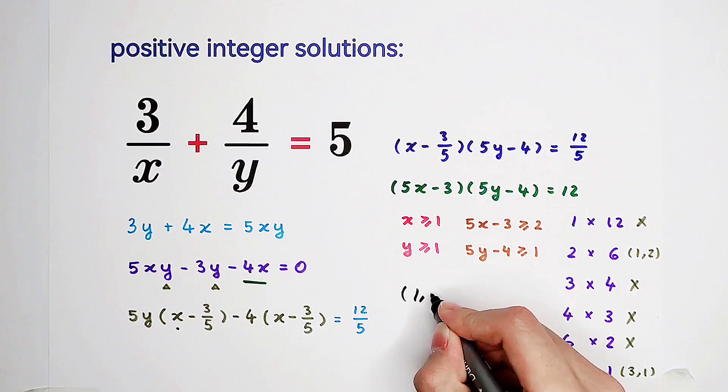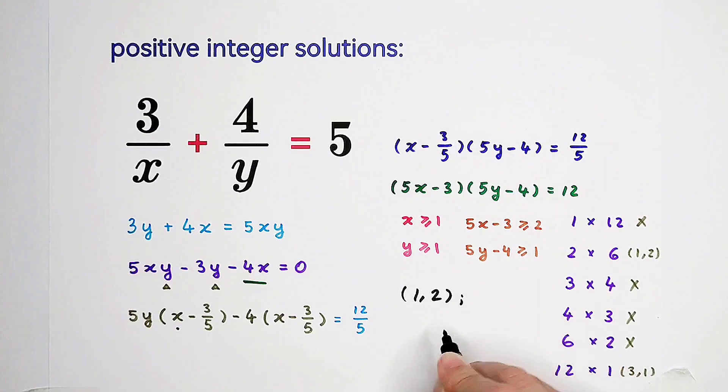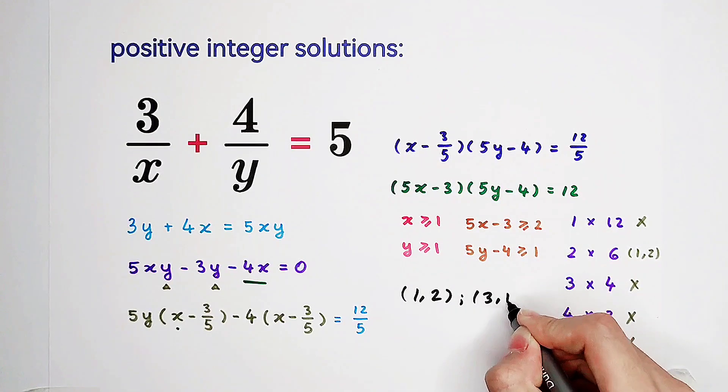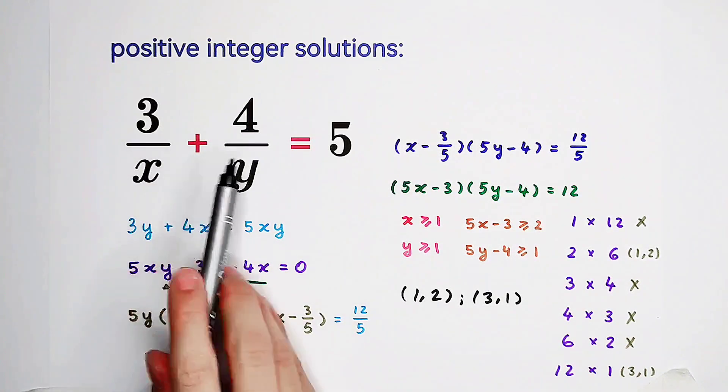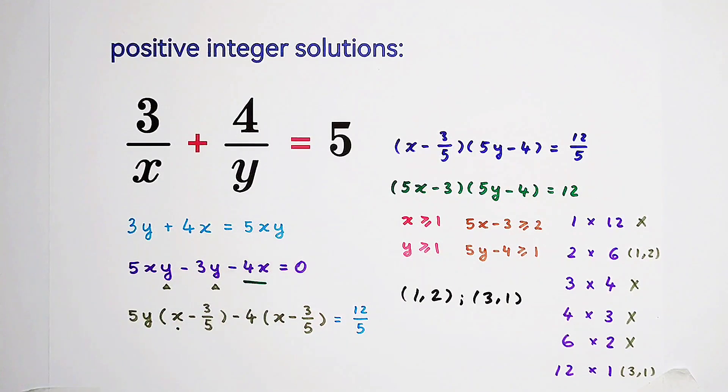So now, you can see there are two pairs of solutions. There are 1, 2, and 3, 1. 3 plus 2 is 5. 1 plus 4 is 5. Did you get them? Give a thumbs up. We'll see you next time, bye-bye.